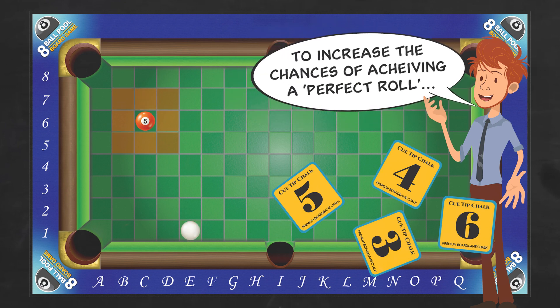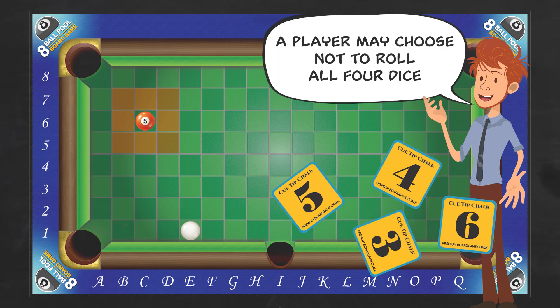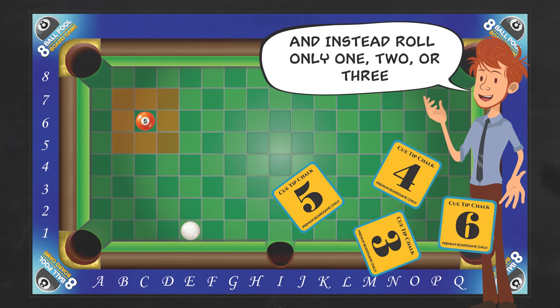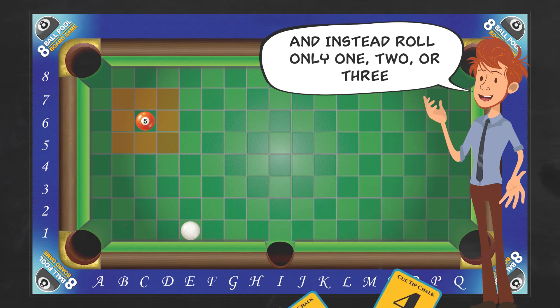To increase the chances of achieving a perfect roll, a player may choose not to roll all four dice, and instead roll only one, two, or three.